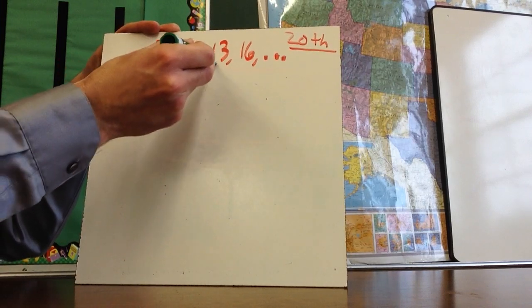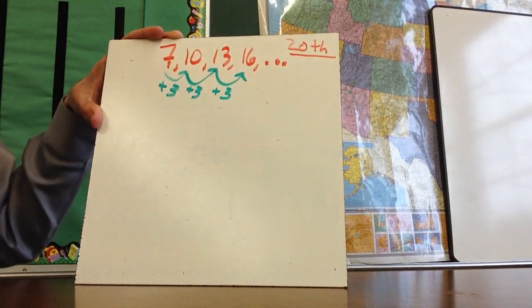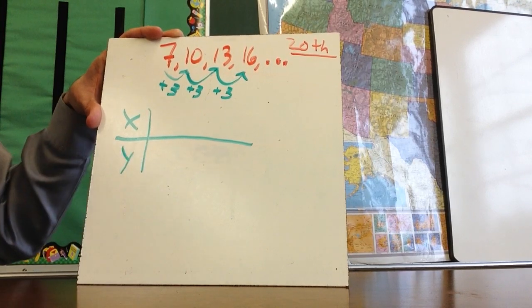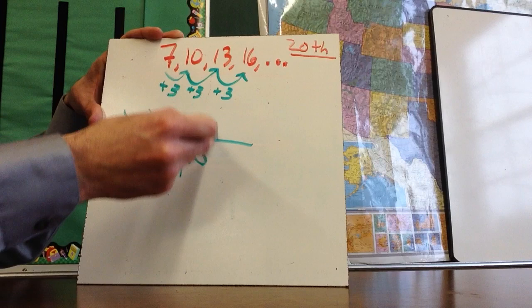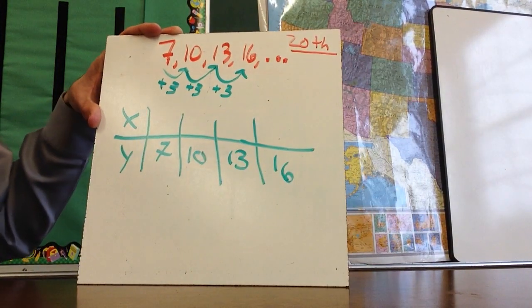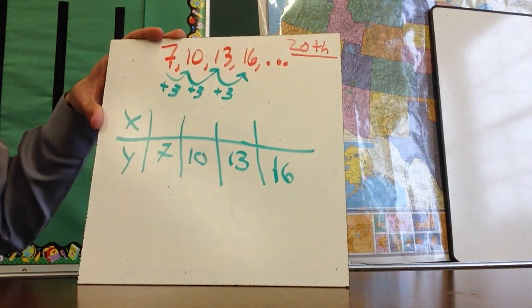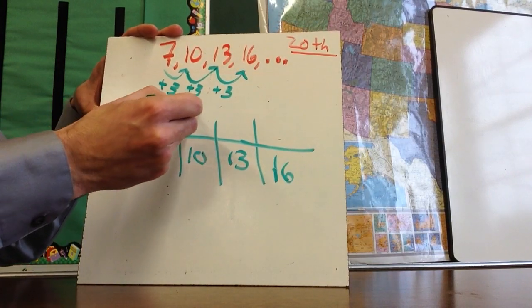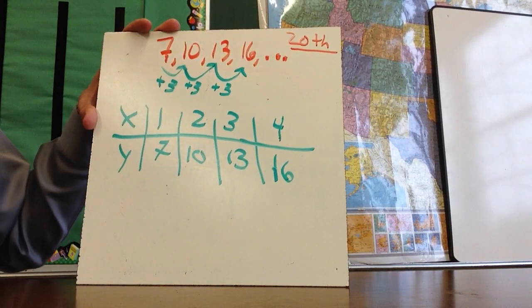So first thing we want to do is find the common difference. And so the common difference here is three. The way that people will write this is I'm going to call this X and Y. These numbers I'm going to say are my Y values. The numbers that I was given, these terms, the values are my Y. The term numbers—this is the first term, the second term, the third term, and the fourth term—those are my X values.